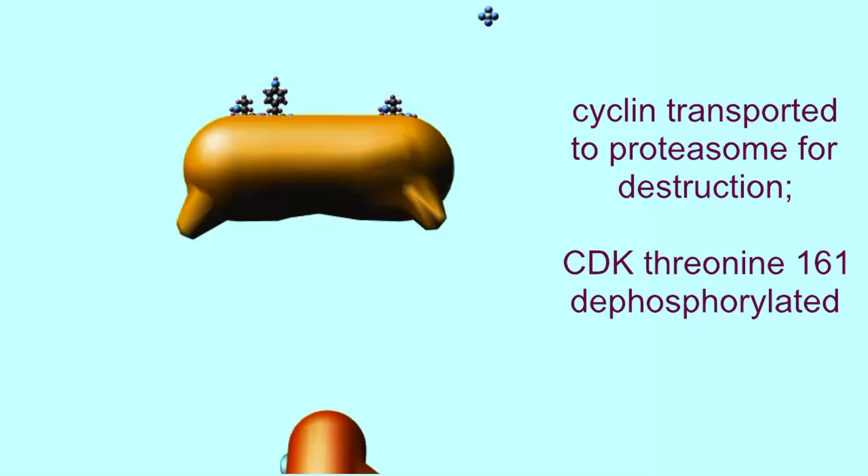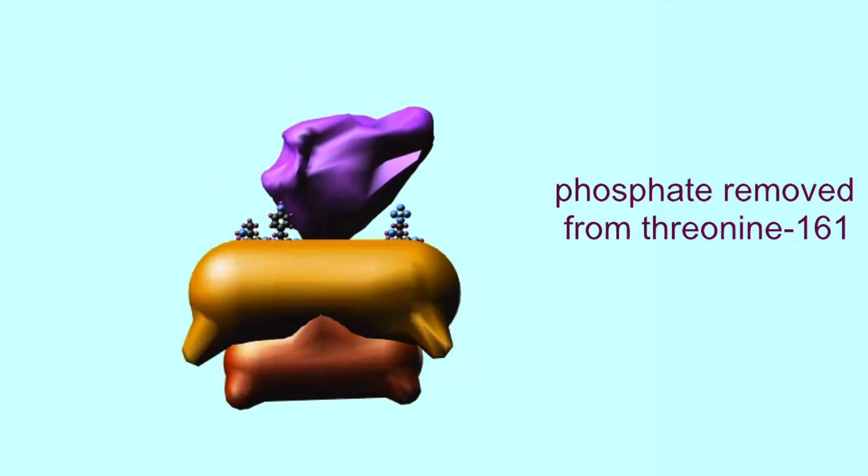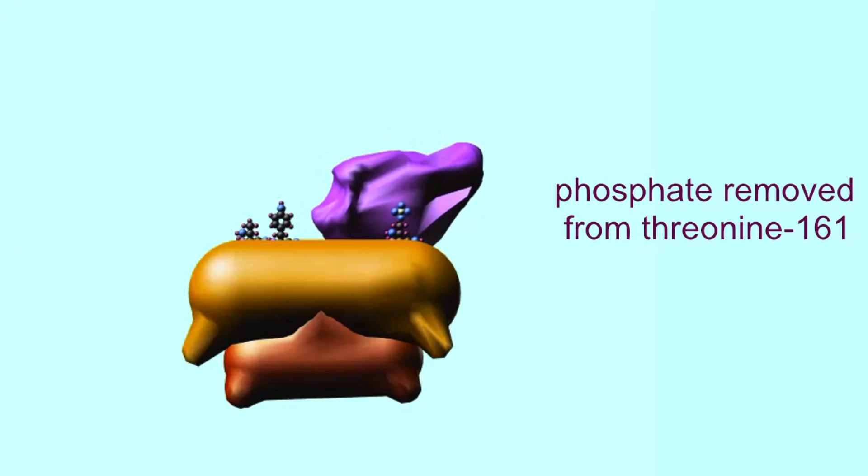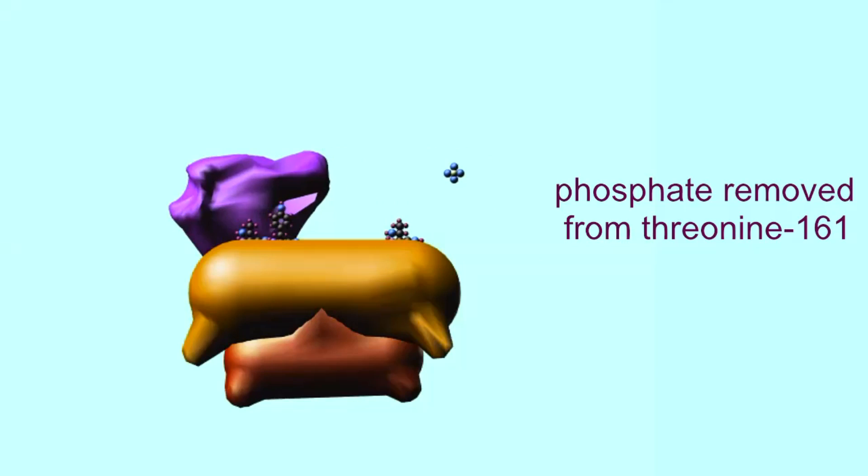The proteasome is a complex which destroys targeted proteins. Once threonine-161 is dephosphorylated, the CDK has returned to its original starting state and the cycle can begin again.